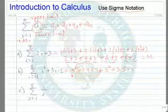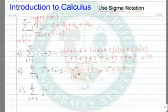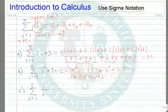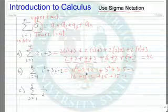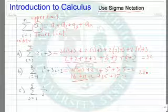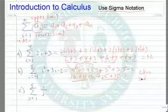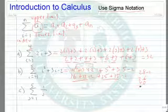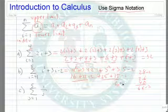So we have 16 plus 12 minus 2, plus 25 plus 15 minus 2. So we have 28 minus 2 is 26, 25 and 15 is 40, so we have 66 minus 2. So our final answer in this case would be 64.